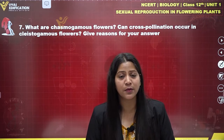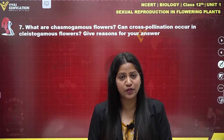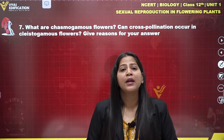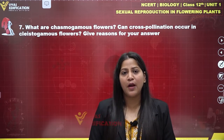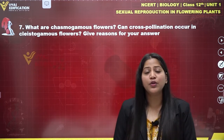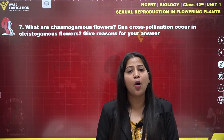Cleistogamous flowers will only have self-pollination, whereas chasmogamous flowers always follow cross-pollination. However, in cleistogamous flowers, seed production takes place with the help of self-pollination only. There are some plants which have both types of flowers, such as Oxalis and Viola — these are examples of plants with both types of flowers on a single plant body.